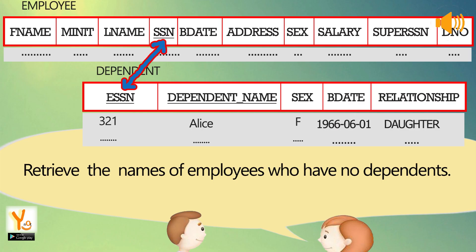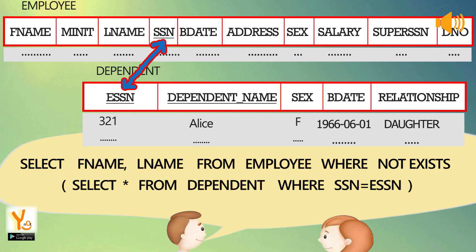Retrieve the names of employees who have no dependents. SELECT Fname, Lname FROM employee WHERE NOT EXISTS (SELECT * FROM dependent WHERE SSN = ESSN).